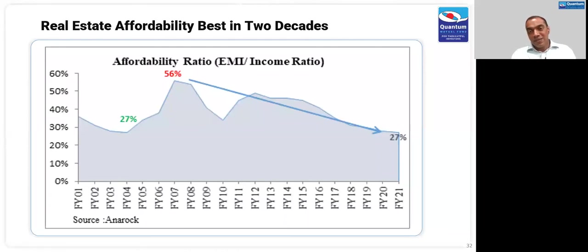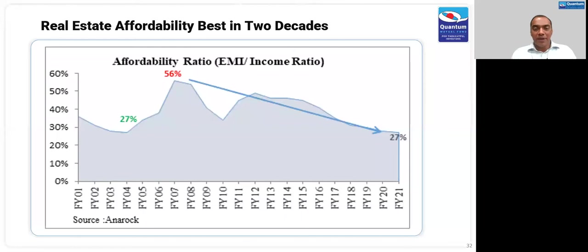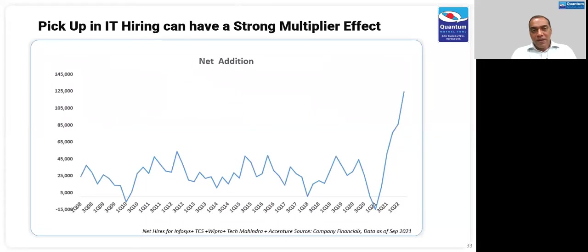Real estate is a sector very important for overall economic GDP growth — construction is the second largest employer after agriculture. Once you buy a house, you fill it with consumer durables, buy a car, paint it — again creating a multiplier effect. We are already seeing a trend where real estate transactions are picking up, and given our sense that interest rates are not going to materially move higher, we expect this to be a very strong catalyst driving economic growth. We think real estate could be at the cusp of a multi-year upcycle — next five to six years of very strong real estate growth.